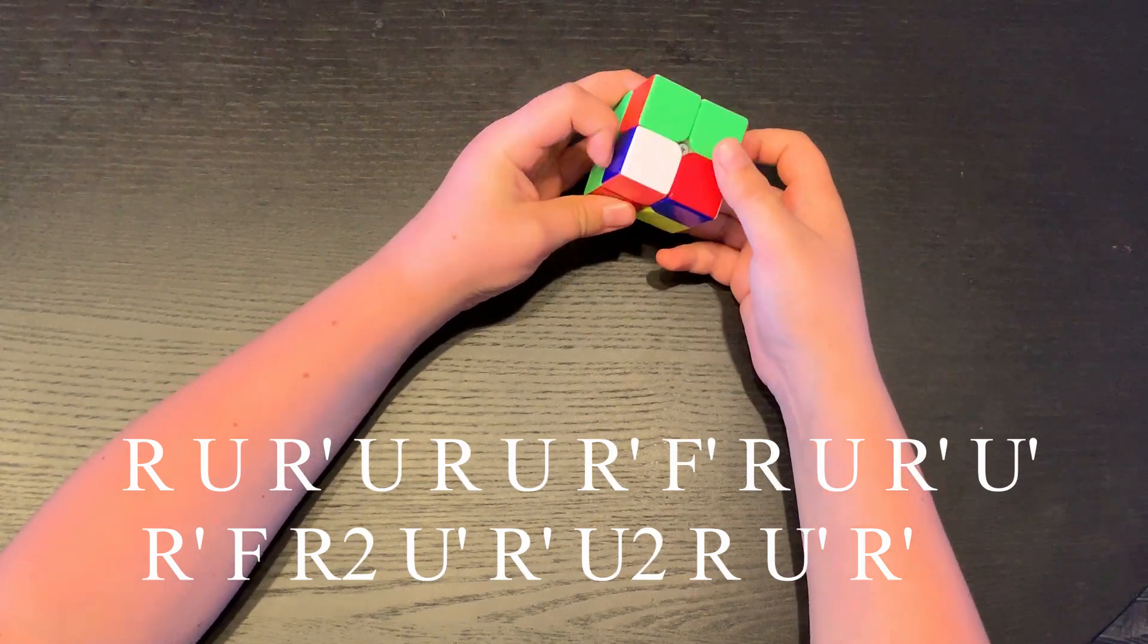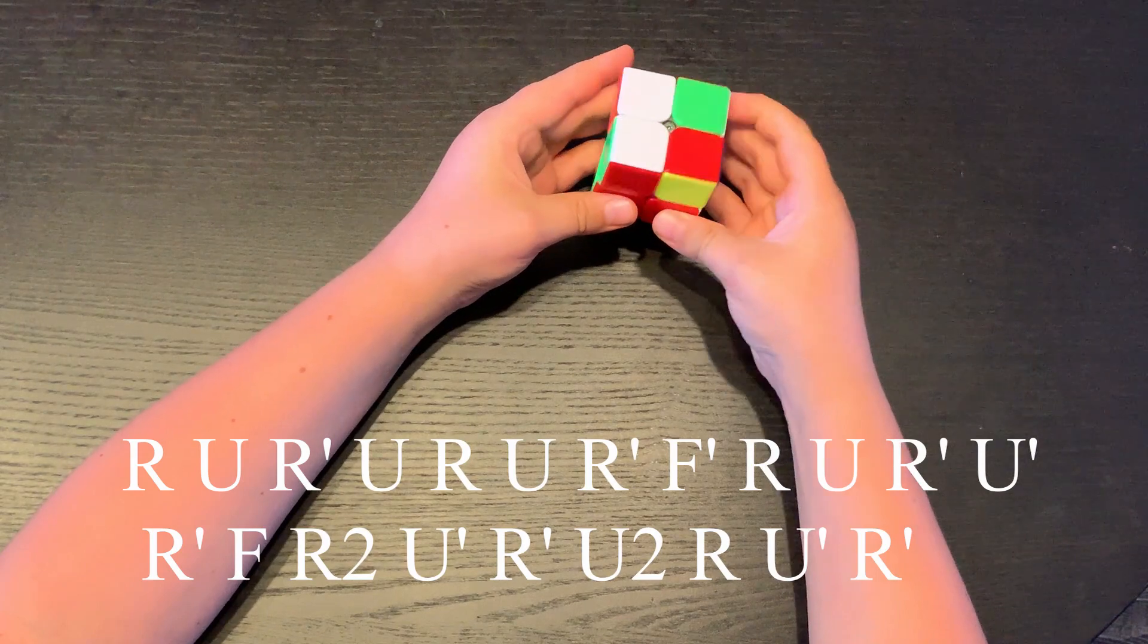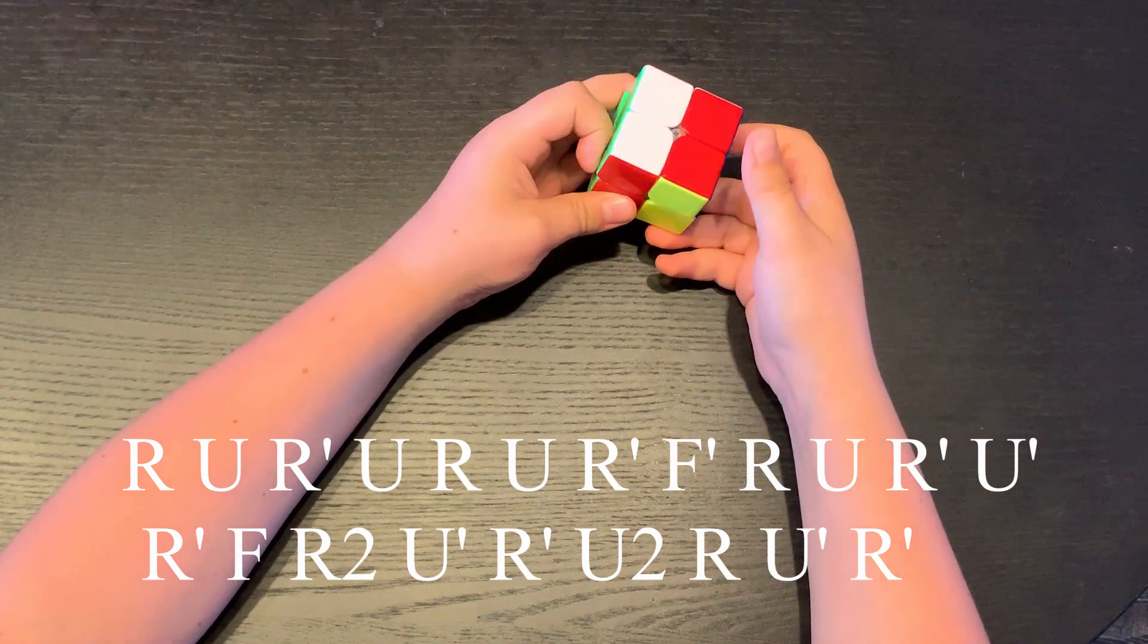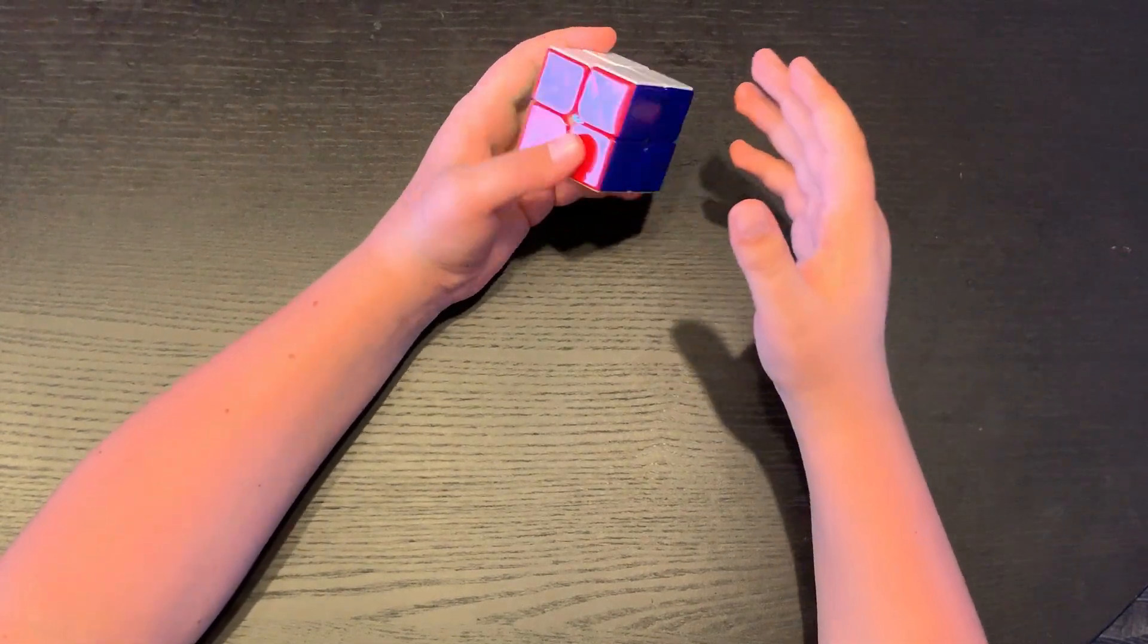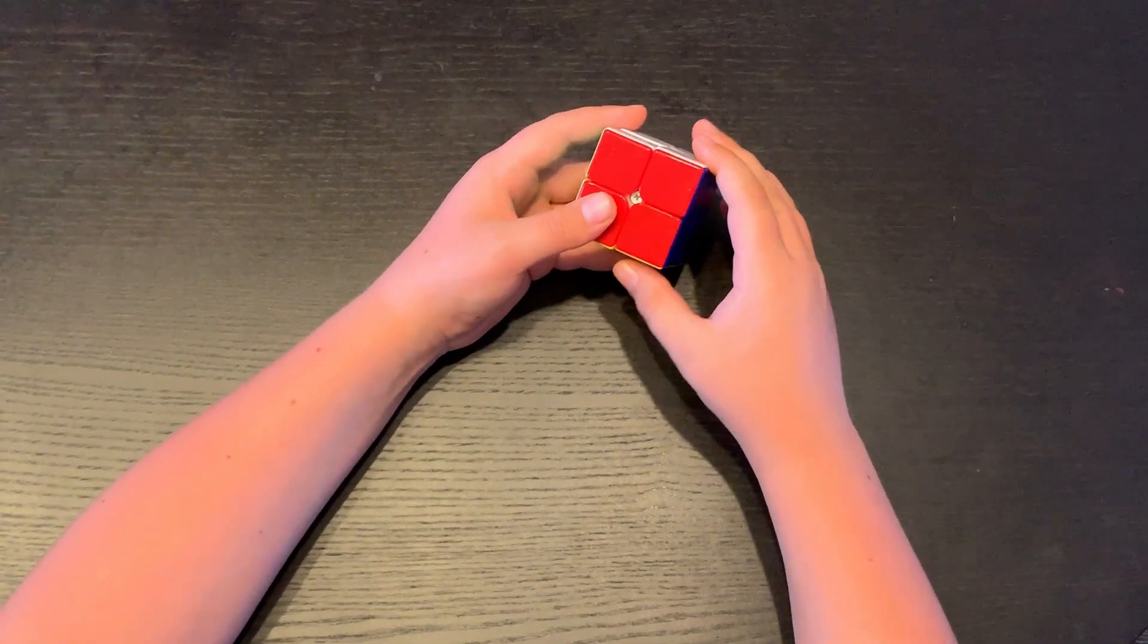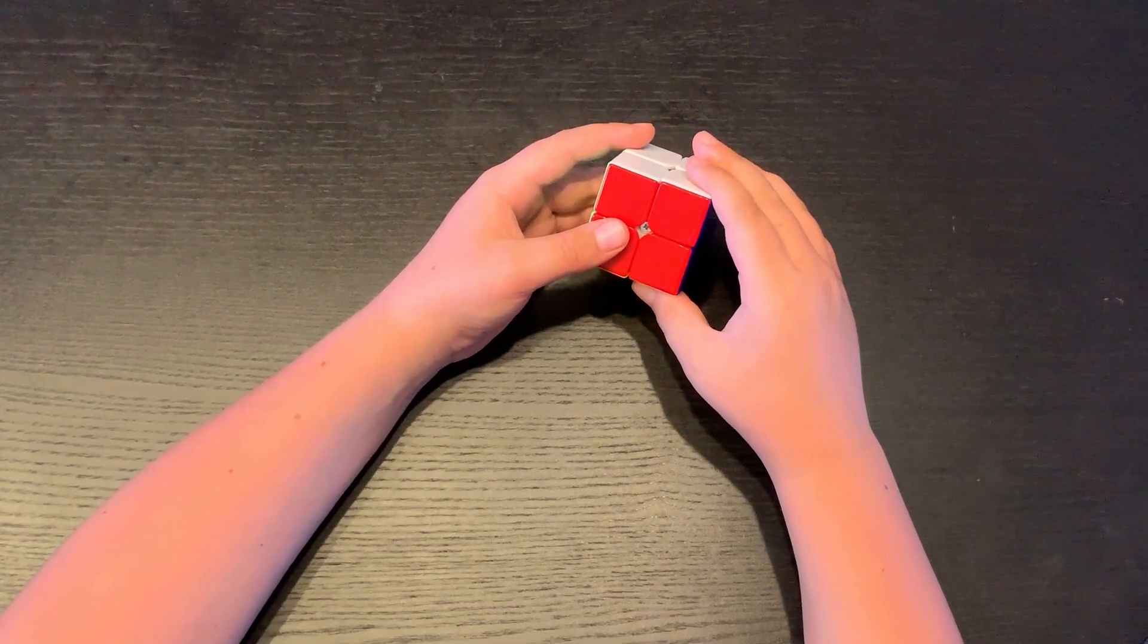So that was the N perm, and the N perm is actually 21 moves. So that would be hard to memorize. That's a lot of moves.